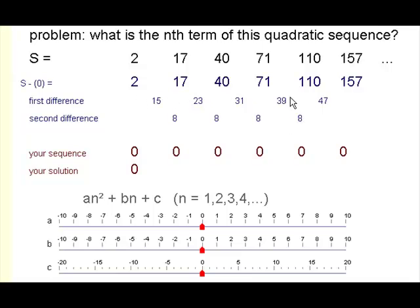The second difference is here. It's the difference between the first difference numbers. And it's 8 every time. This number being the same tells you that you're dealing with a quadratic sequence.